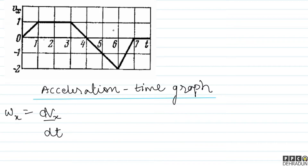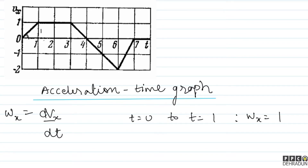Toh dekho bachyo, is graph ko hum log alag-alag intervals mein tod sakte hain. Jaise ki agar main baat karun t equal to 0 se lekar ke t equal to 1 tak. Toh yahan par aap dekh sakte hain ki slope is graph ka kya hoga — slope ho jaayega 1 upon 1, kyunki perpendicular 1 hai aur base bhi 1 hai. Toh t = 0 to t = 1 mein wx ki value ho jaayegi 1 meter per second square. Main yeh assume kar raha hoon ki saara jo data hai wo SI units mein diya hua hai.